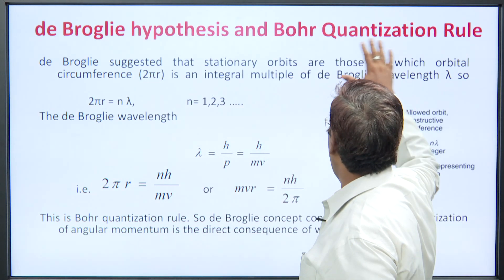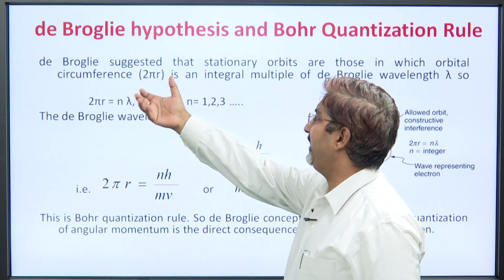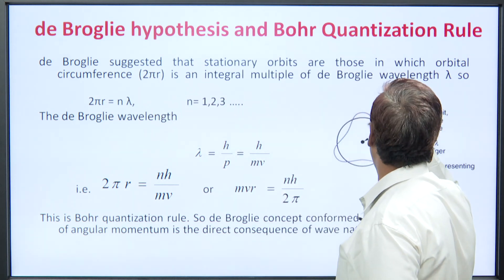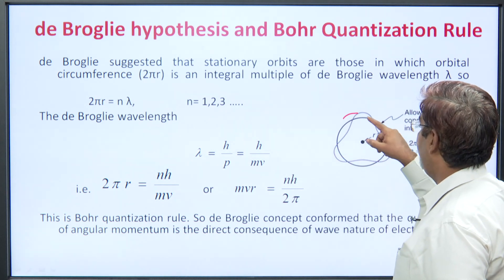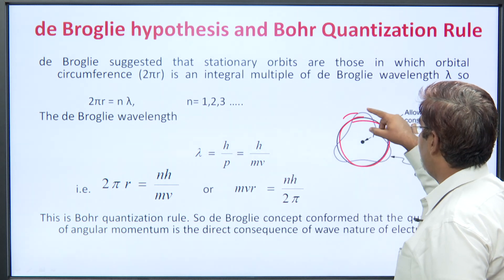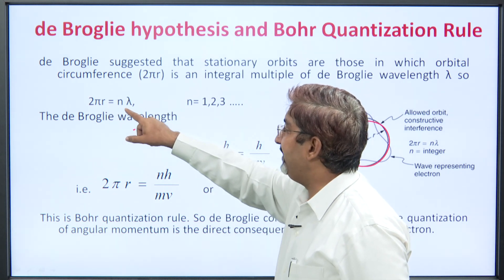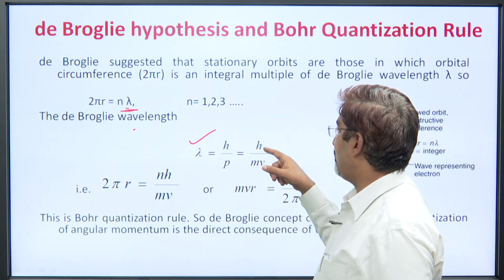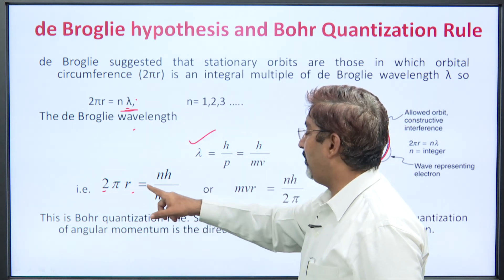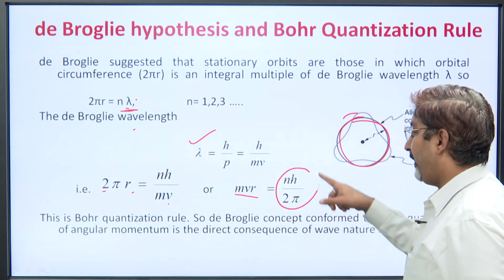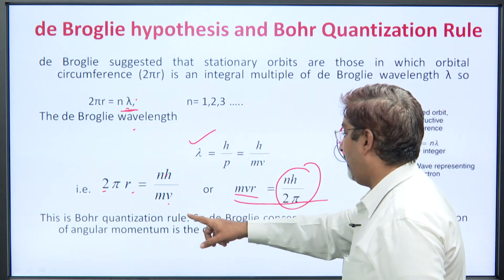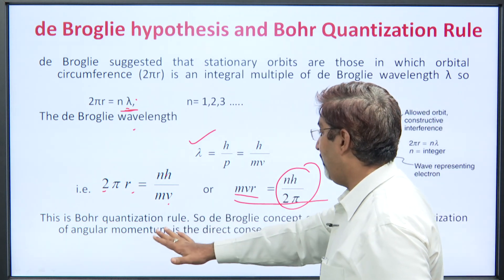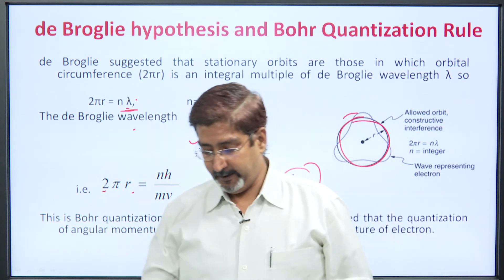De Broglie's hypothesis and Bohr's quantization rule are closely related. De Broglie suggested that stationary orbits are those in which the orbital circumference 2πr is an integral multiple of de Broglie wavelength: 2πr = nλ = n(h/mv). Rearranging gives mvr = nh/2π — which is exactly Bohr's quantization rule. Therefore, de Broglie's concept confirms that quantization of angular momentum is a direct consequence of the wave nature of the electron. Thank you.